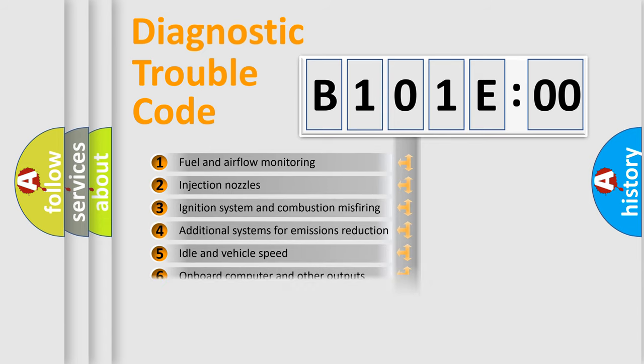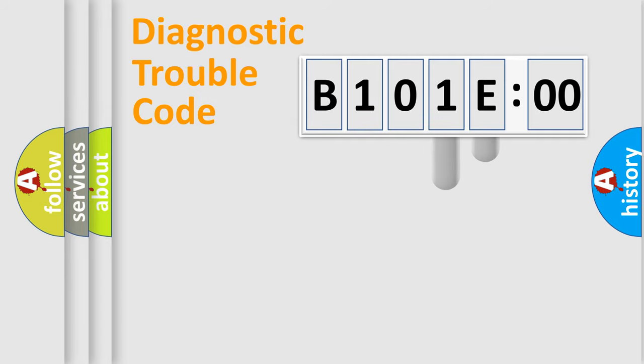The distribution shown is valid only for the standardized DTC code. Only the last two characters define the specific fault of the group.